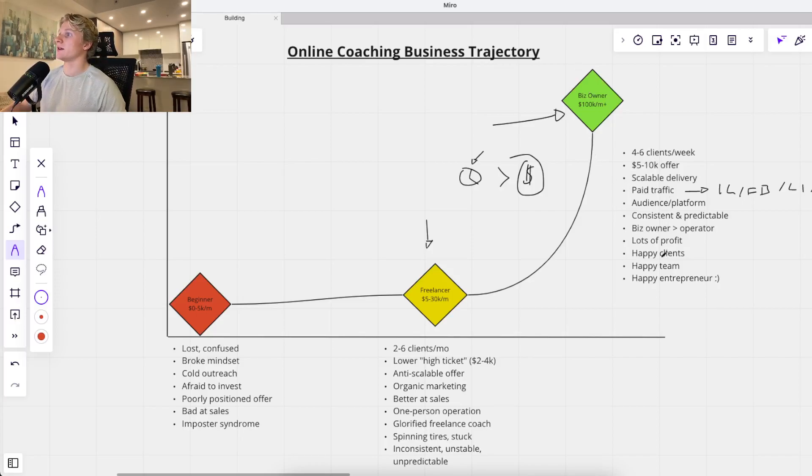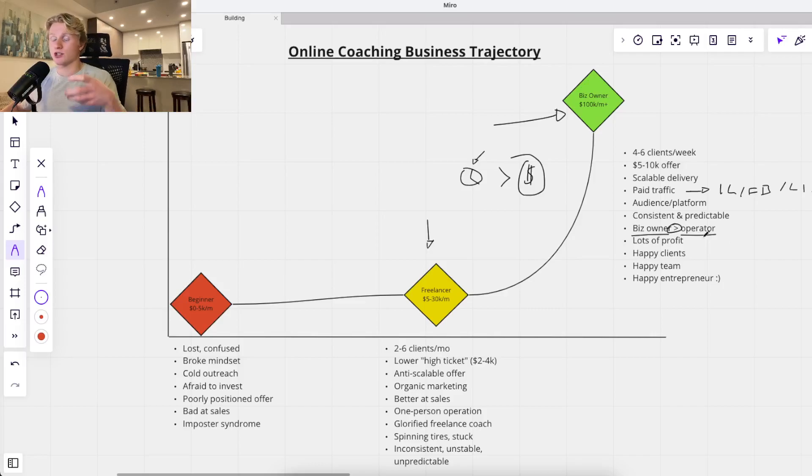So what these guys do as well is they make the transition from an operator to a business owner. They would rather be an owner than an operator. So what this means in English is they're removing themselves from the business. They're getting out of the trenches. So this essentially means systems, building a team as well, and you'd be surprised. You can get here with literally like two team members. All you need is like a setter and a closer, maybe a customer success manager, a coach, something like that, but not absolutely critical because you can fill that role as well. And then anything above this, you'll probably want to fill that as well.